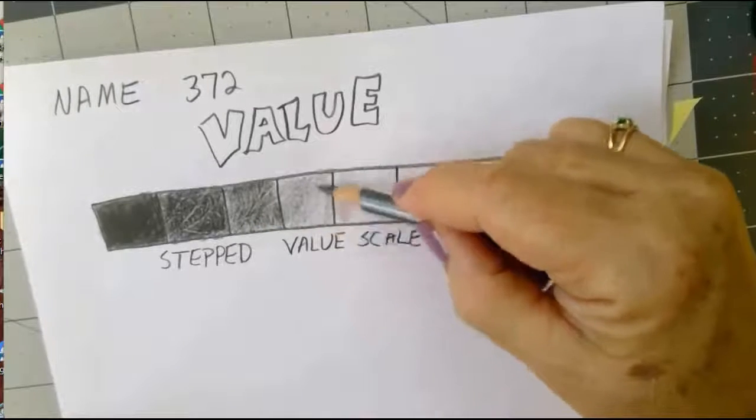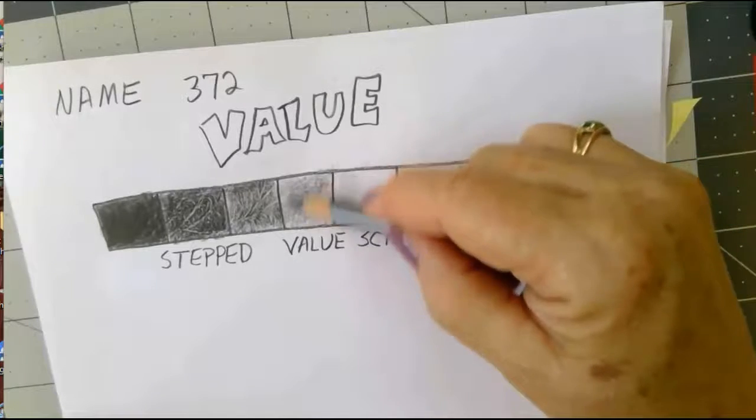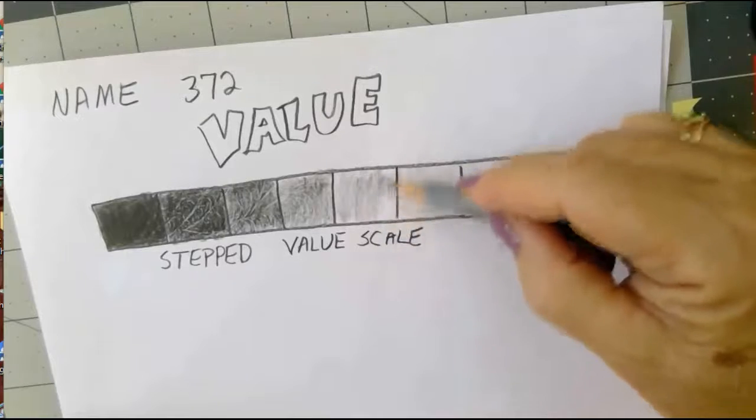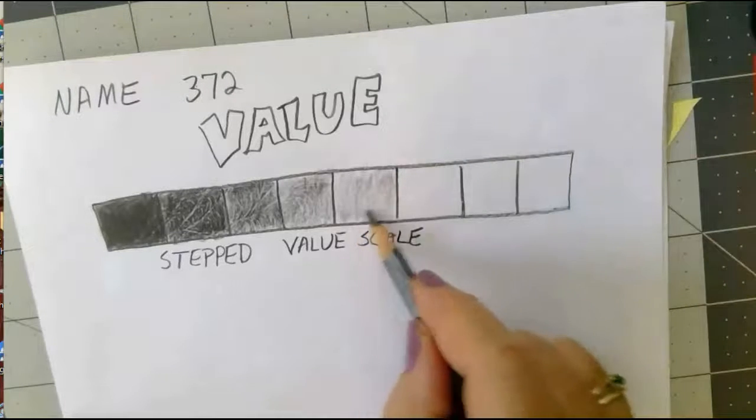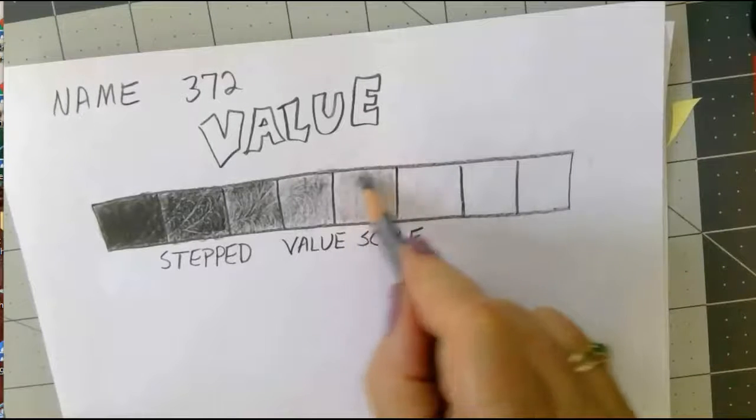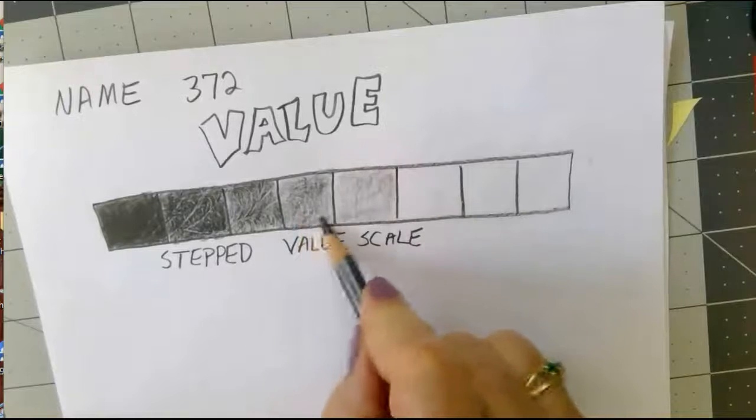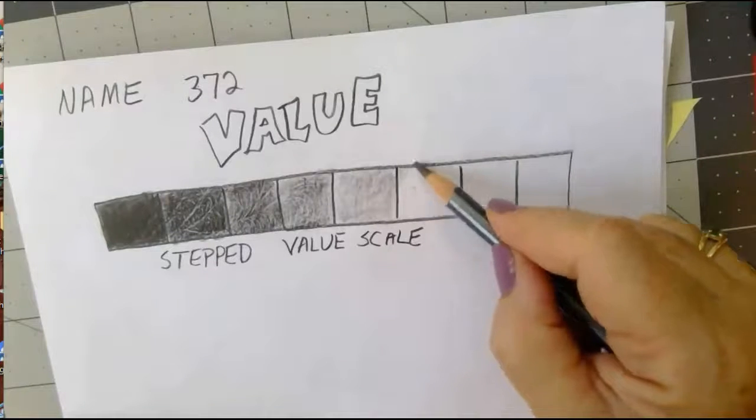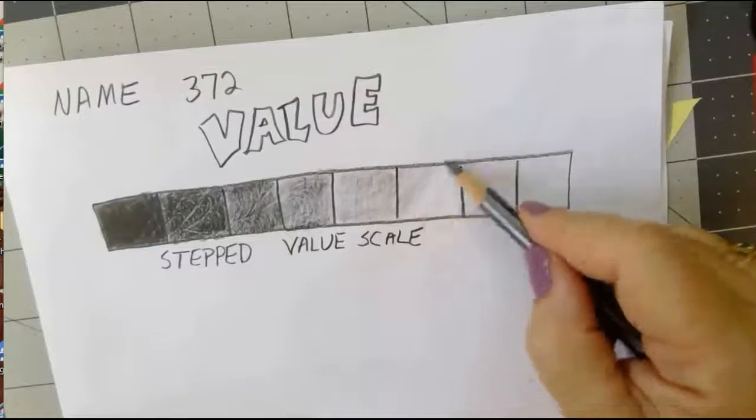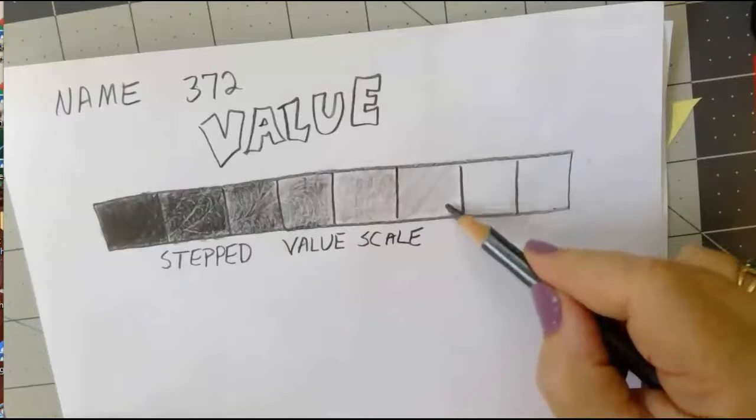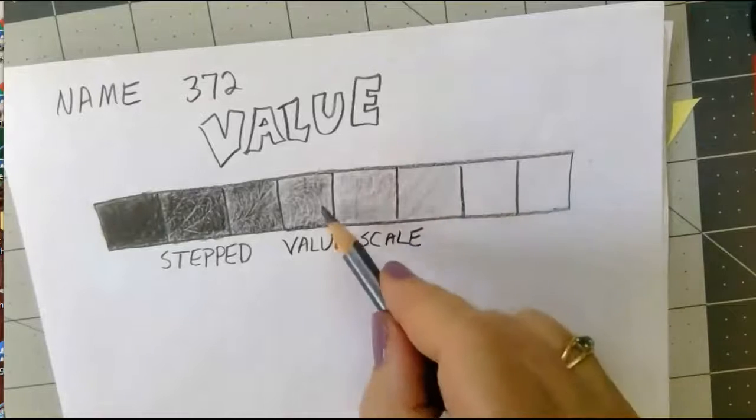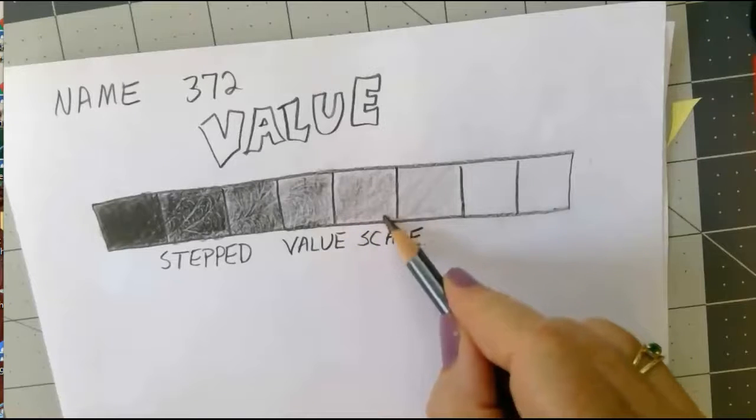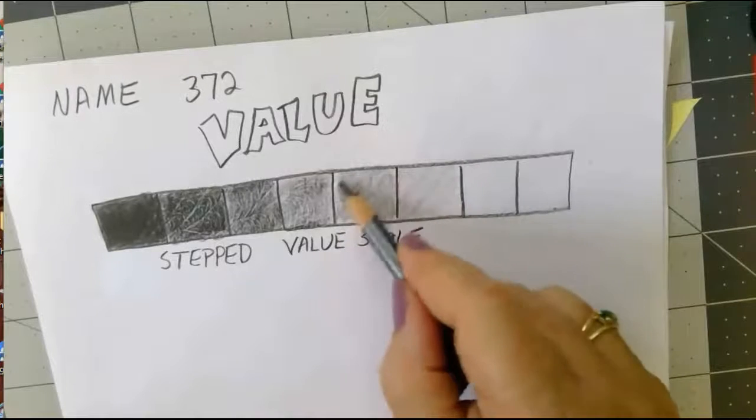Sometimes I kind of go back and forth. If these two suddenly look a lot lighter than that one, I might add a little bit more darkness to this one so that I get a step there. That gives me a little bit more to play with over here. The trick is just to get each one a slightly lighter value than the one before it. If you want to work light to dark you can, I just find it easier to work dark to light.